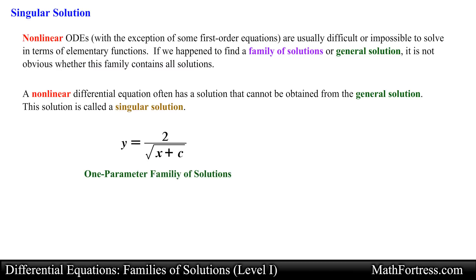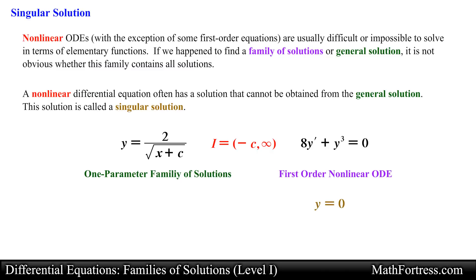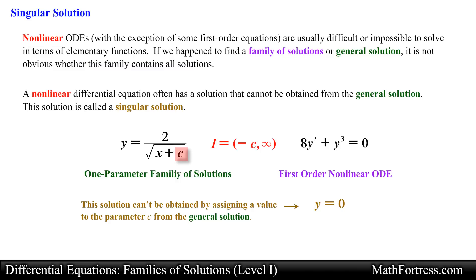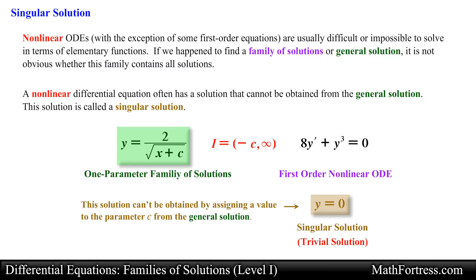For example, the solution y equals 2 over the square root of x plus c is the general solution of the differential equation 8y prime plus y cubed equals 0 on the interval negative c exclusive to positive infinity. Notice that the solution y equals 0 is also a solution of this differential equation, but y equals 0 cannot be obtained by assigning a value to the parameter c from the general solution. This means that y equals 0 is a singular solution of this non-linear differential equation. When dealing with non-linear ODEs, be on the lookout for singular solutions that cannot be obtained from the general solution.